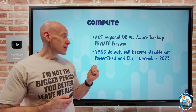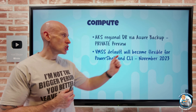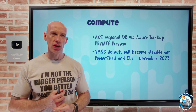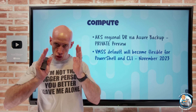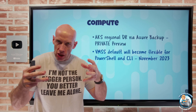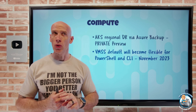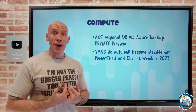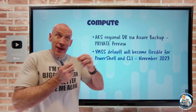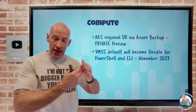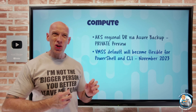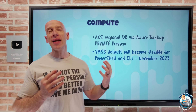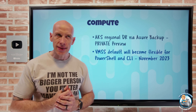Virtual machine scale sets — the default orchestration mode will change to Flexible if you're using PowerShell or CLI in November 2023. A virtual machine scale set is a group of virtual machines you can manage collectively, and it has two orchestration modes. We're used to Uniform: a single template replicated a certain number of times, it can scale out and in, but the VMs created are not regular VMs and there are some limits on what that scale set can do.